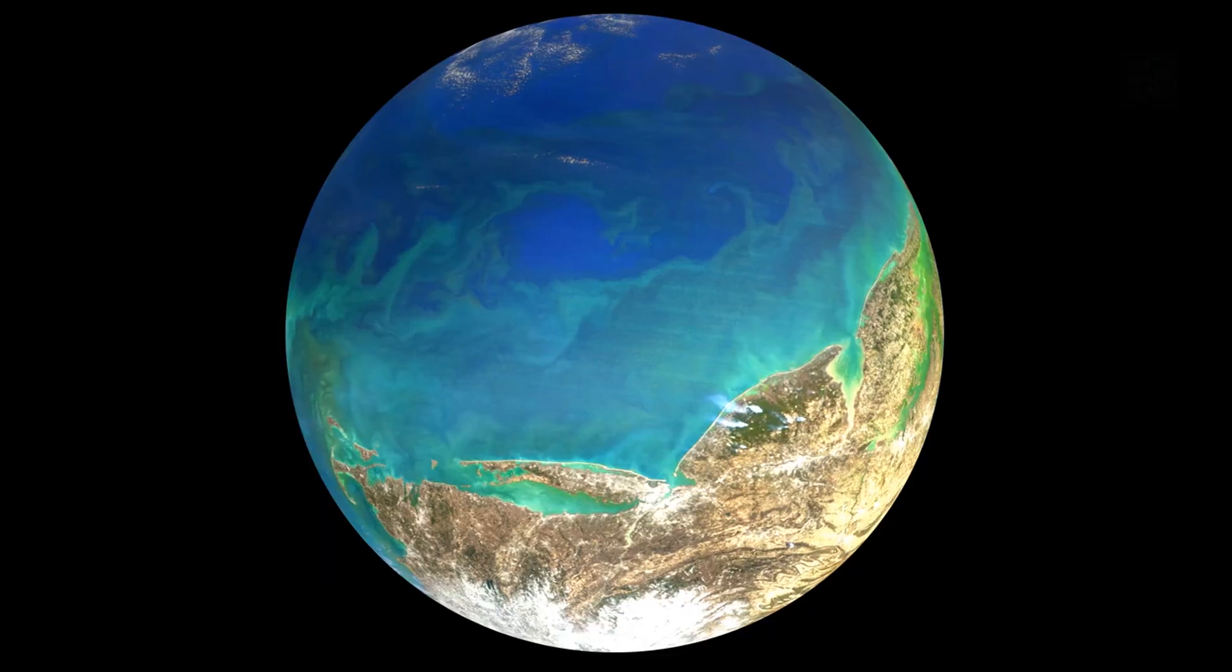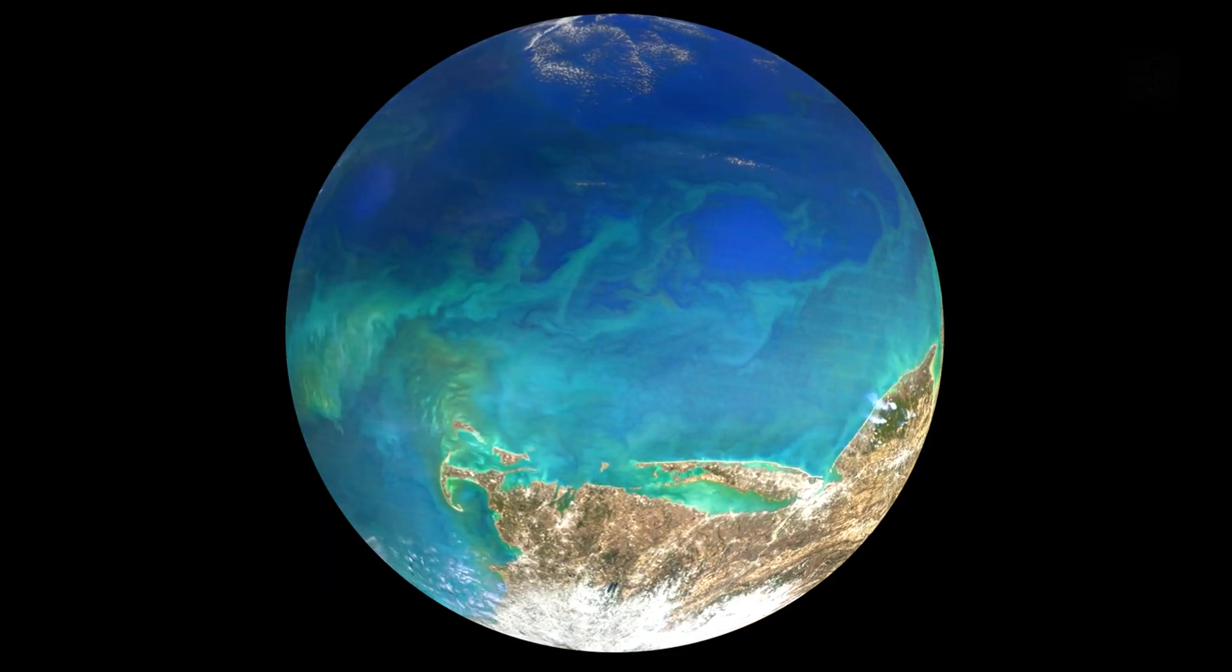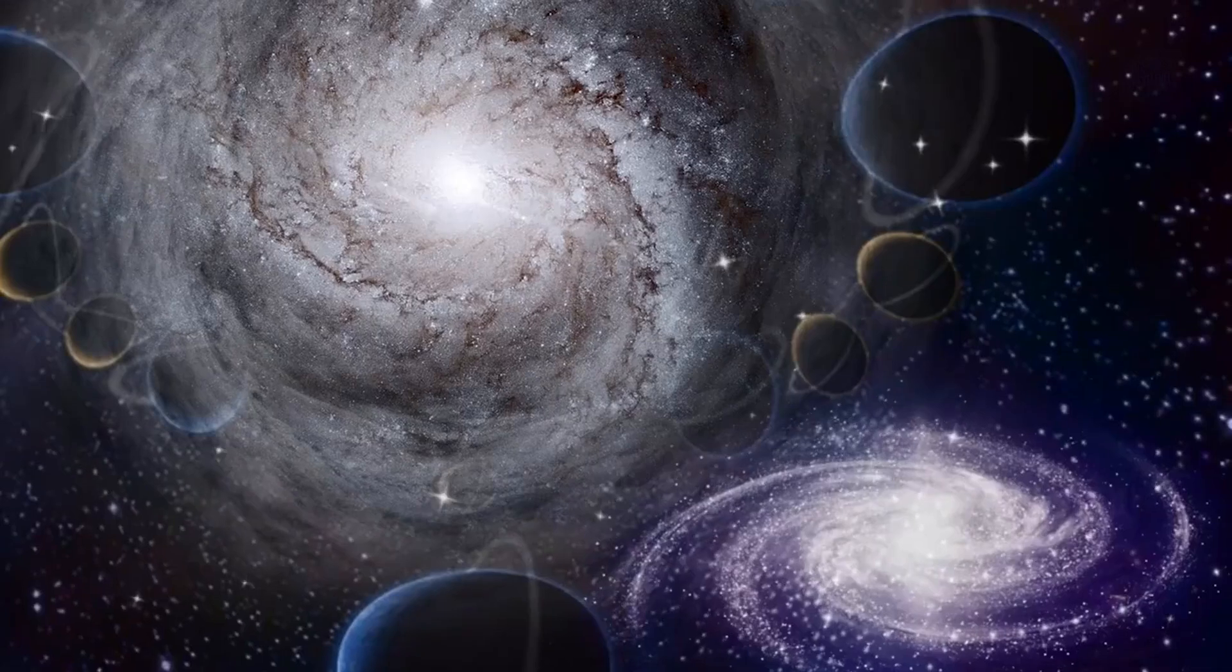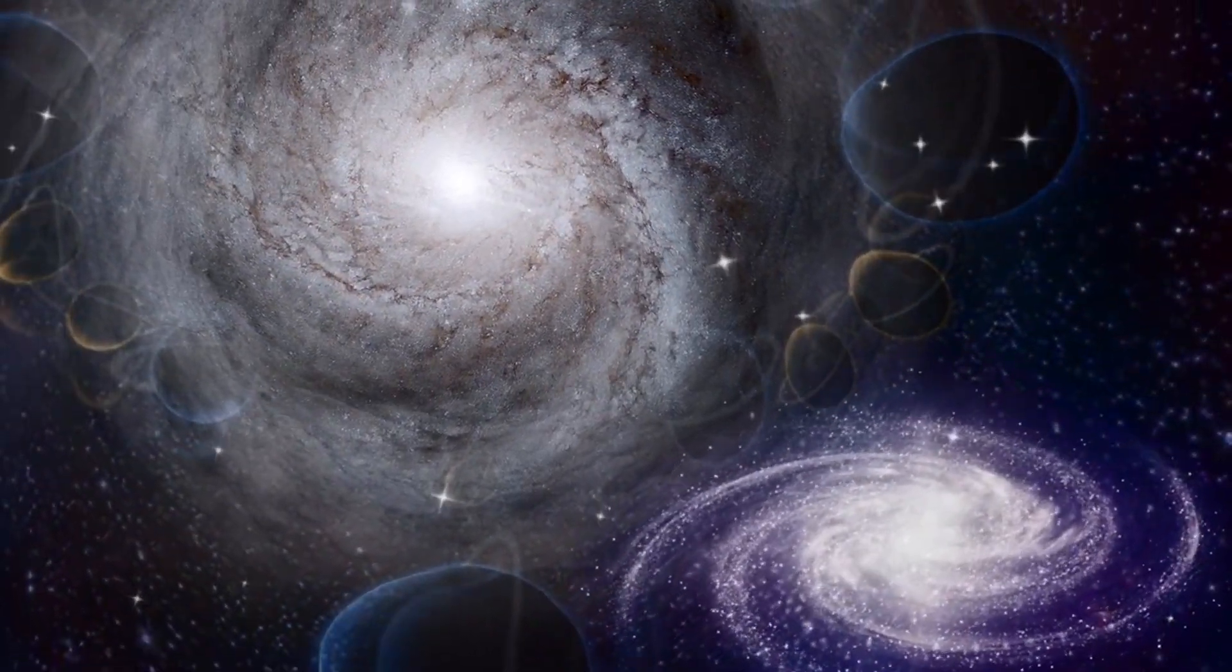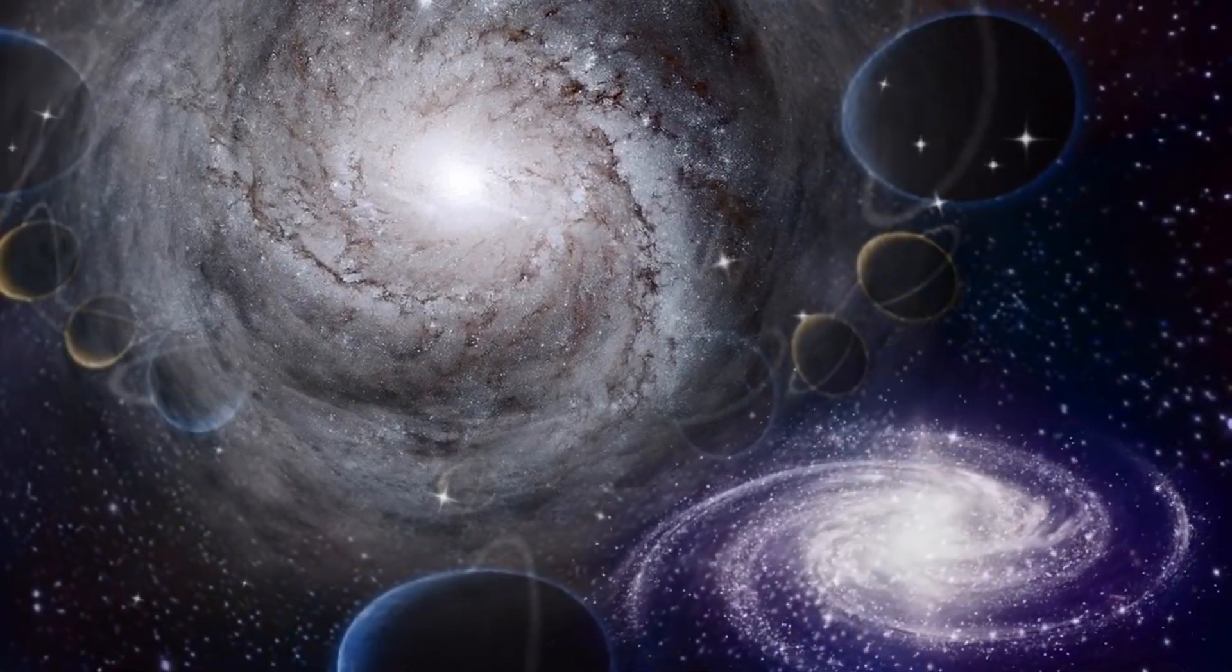They say the universe had an equal share of matter and antimatter at the Big Bang, meaning everything should have annihilated itself into pure energy. No planets. No life. No cosmic wonders. Yet, matter somehow won out, allowing the swirling galaxies and raging stars we see today.